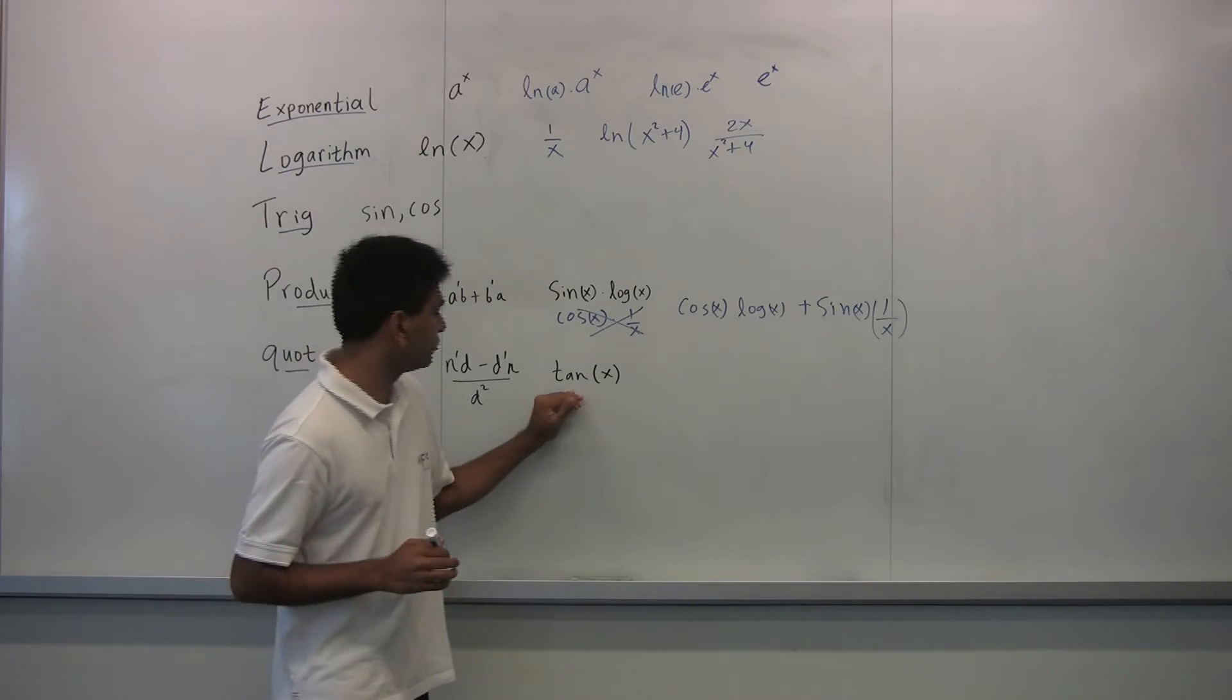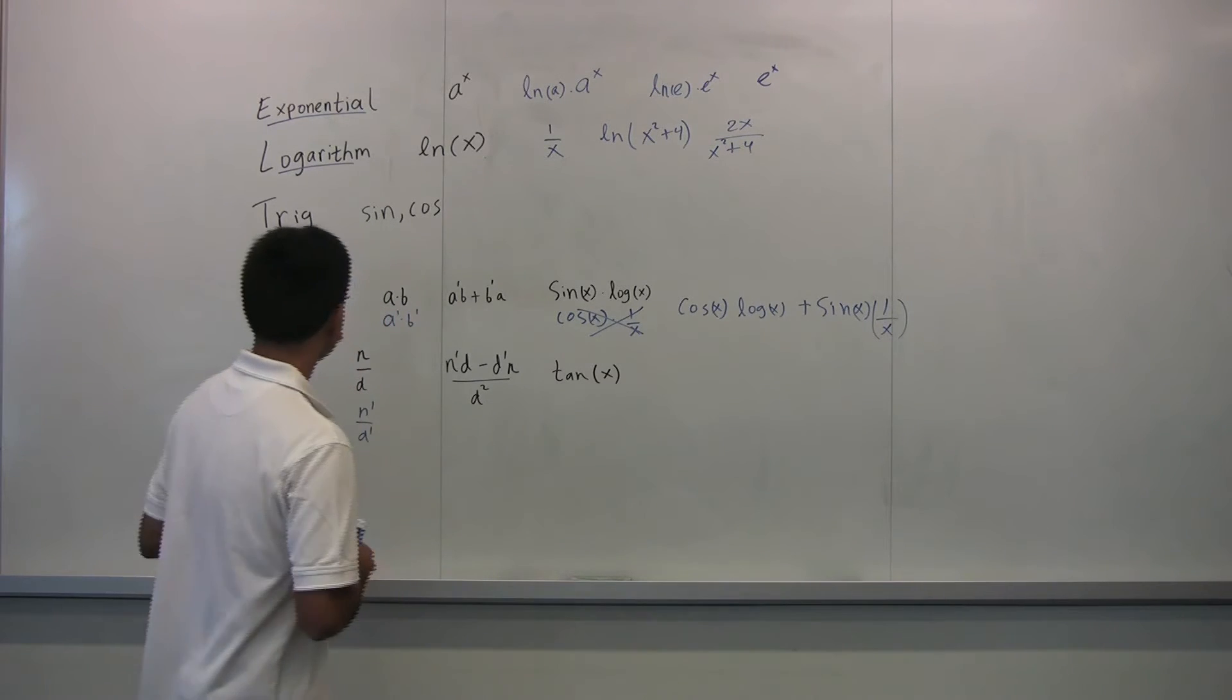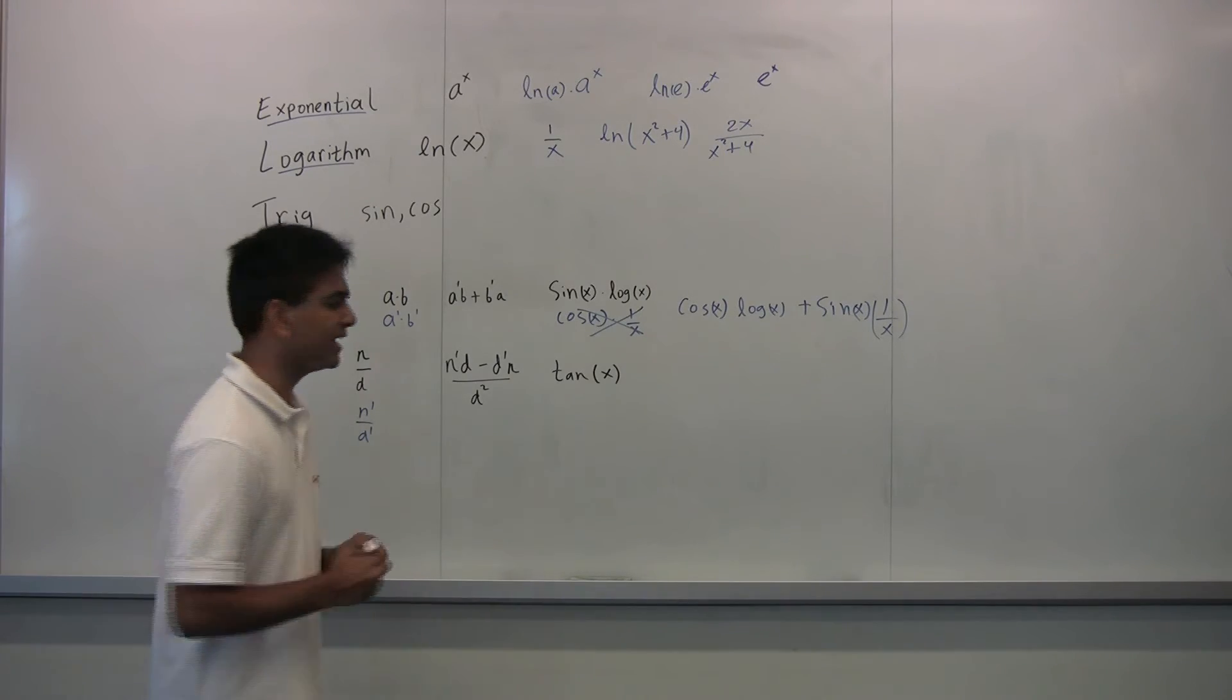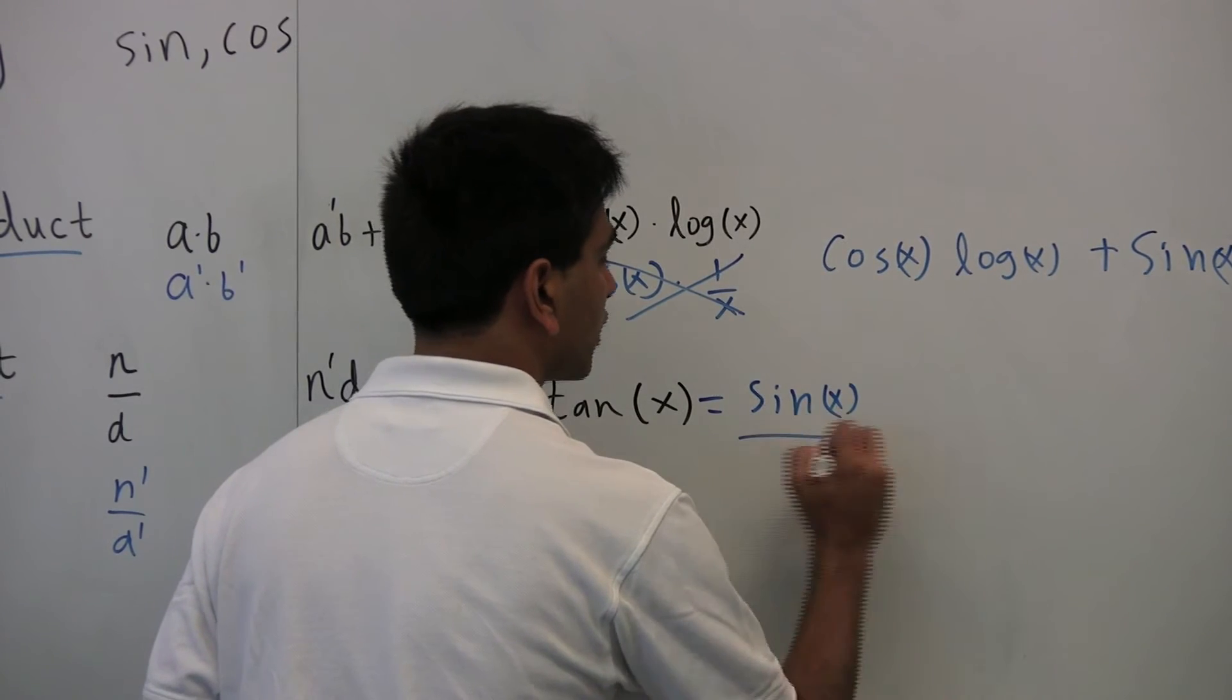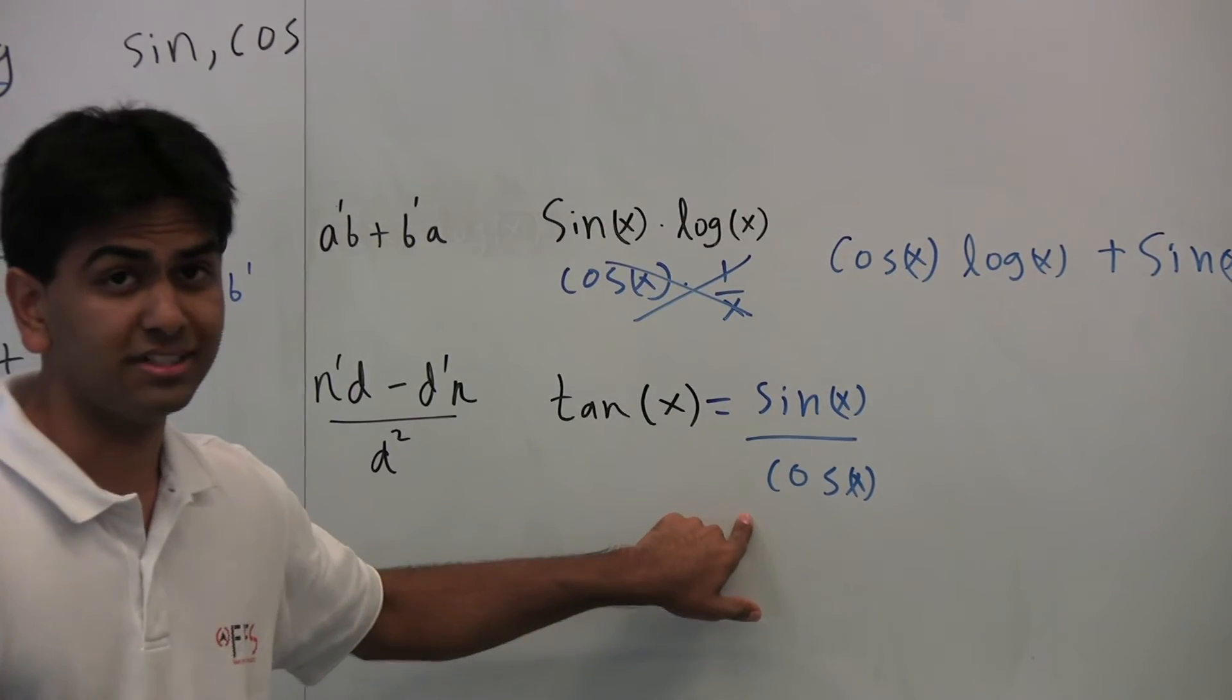So now what if the question is, what's the derivative of tangent of x? How do we use a quotient rule there? Well, we know that tangent of x is equal to sine of x over cosine of x. So now this is our numerator, our n, and this is our d.